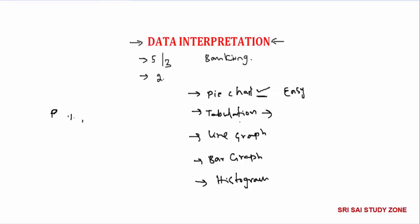Tabulation is very tough. Key concepts include average — the sum of the values — as well as highest and lowest marks, percentage, percentage decrease, and simplification sums.